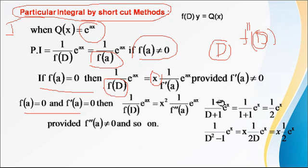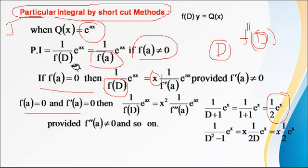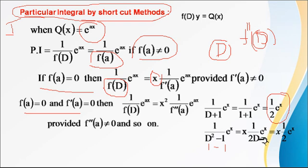For example, 1 upon (D+1) times e raised to x: we replace D with x coefficient 1, so 1 plus 1 equals 2. Denominator is not zero, so the solution is e^x / 2. For 1 upon (D²−1) times e raised to x: replacing D with 1 gives 1 minus 1 equals 0, so denominator is 0. We differentiate D²−1 to get 2D, multiply by x, then replace D with 1: 2 times 1 equals 2, which is not zero. Therefore the solution is x·e^x / 2.